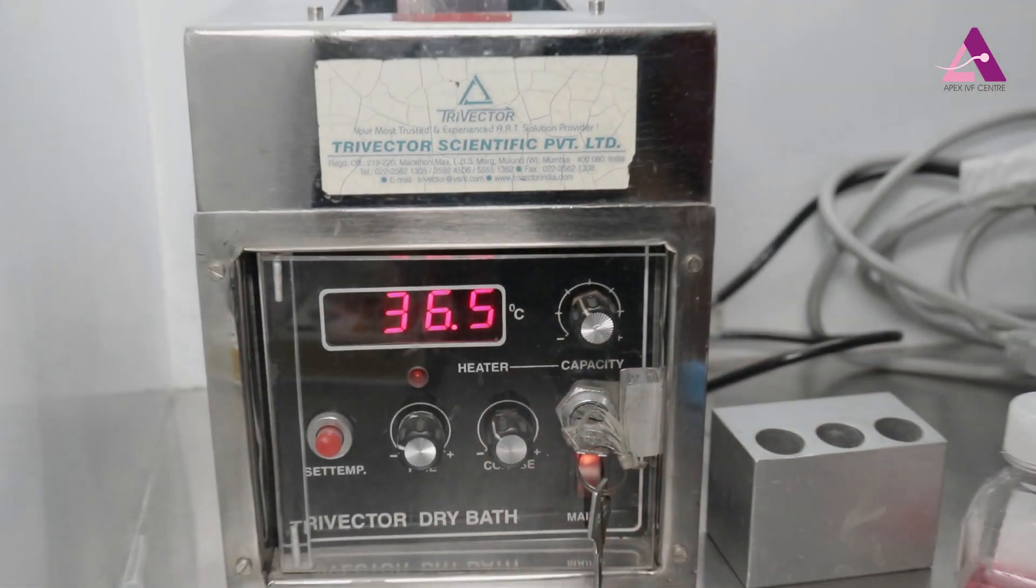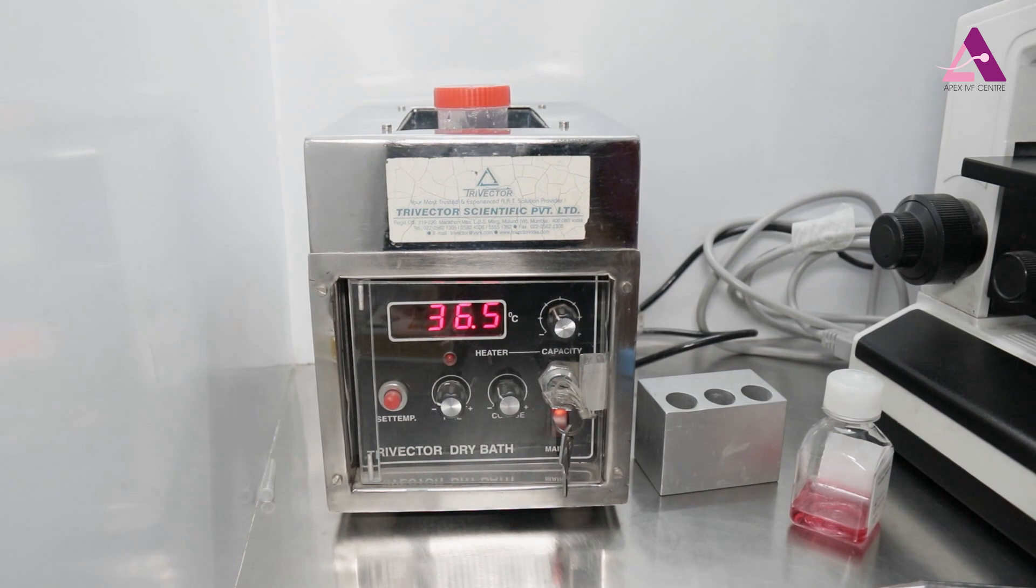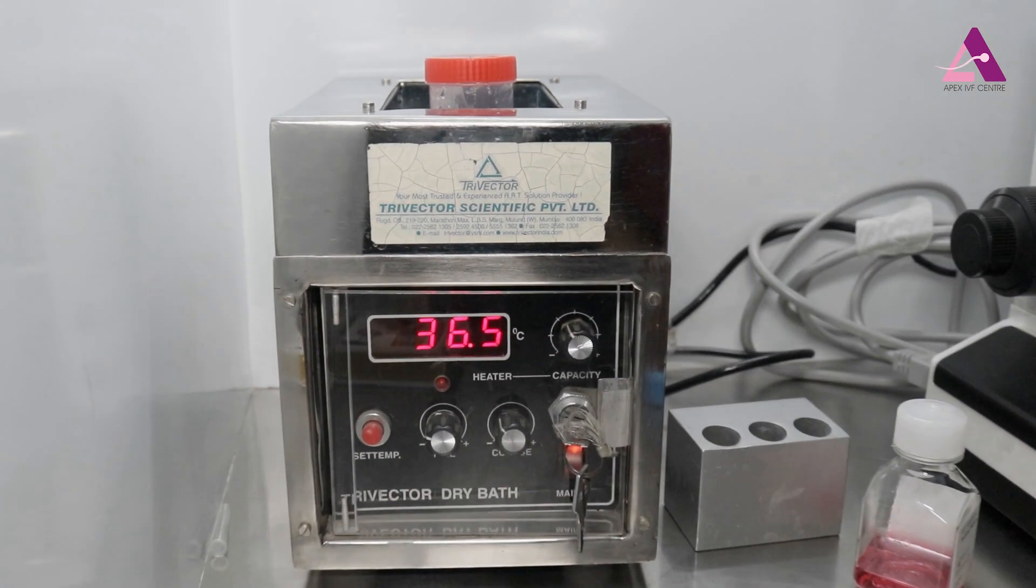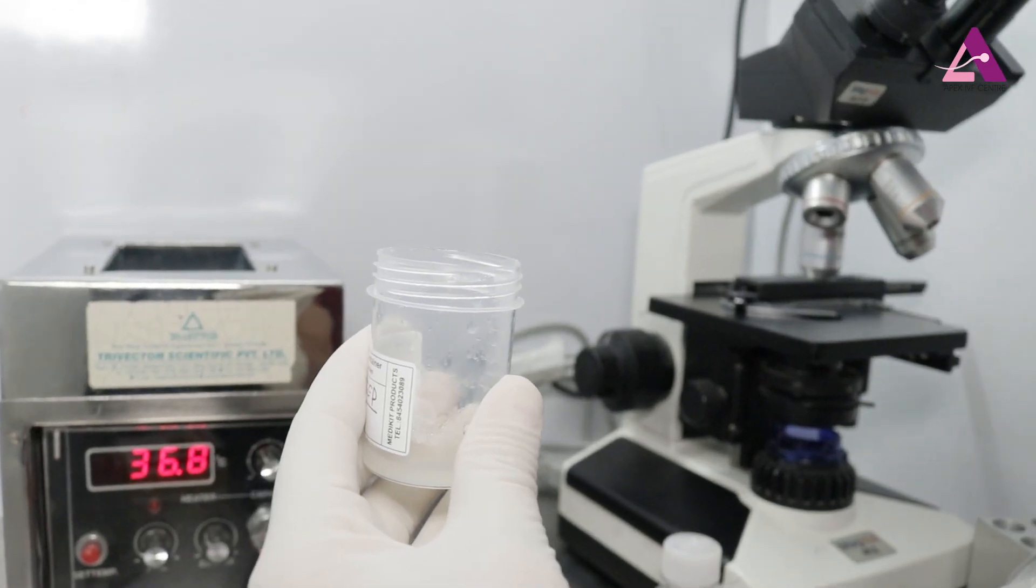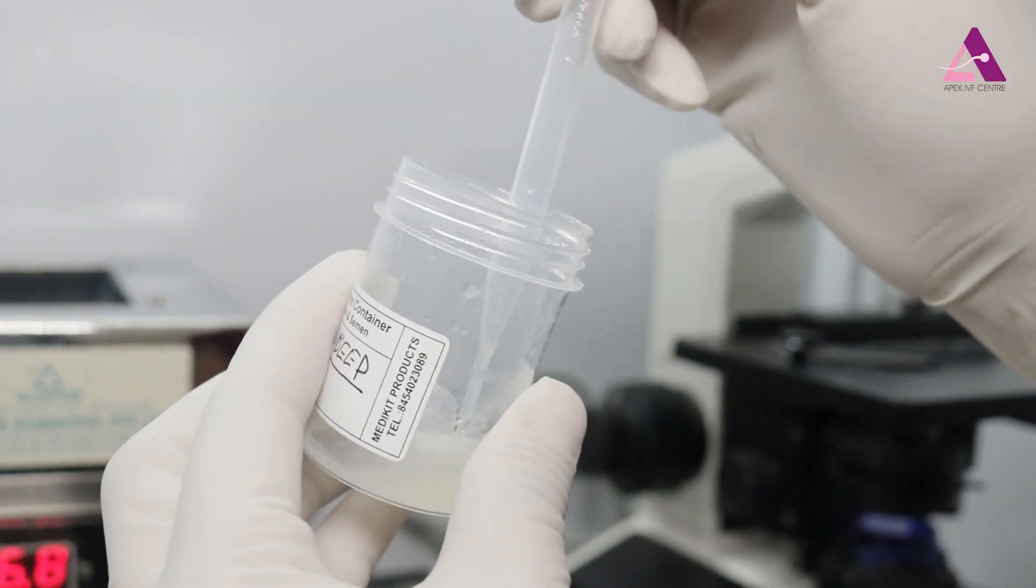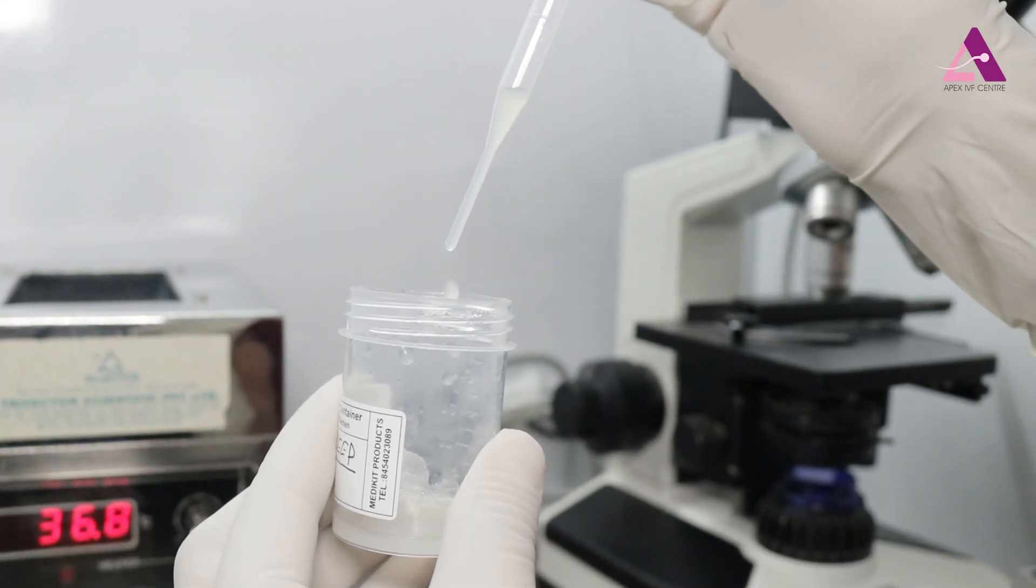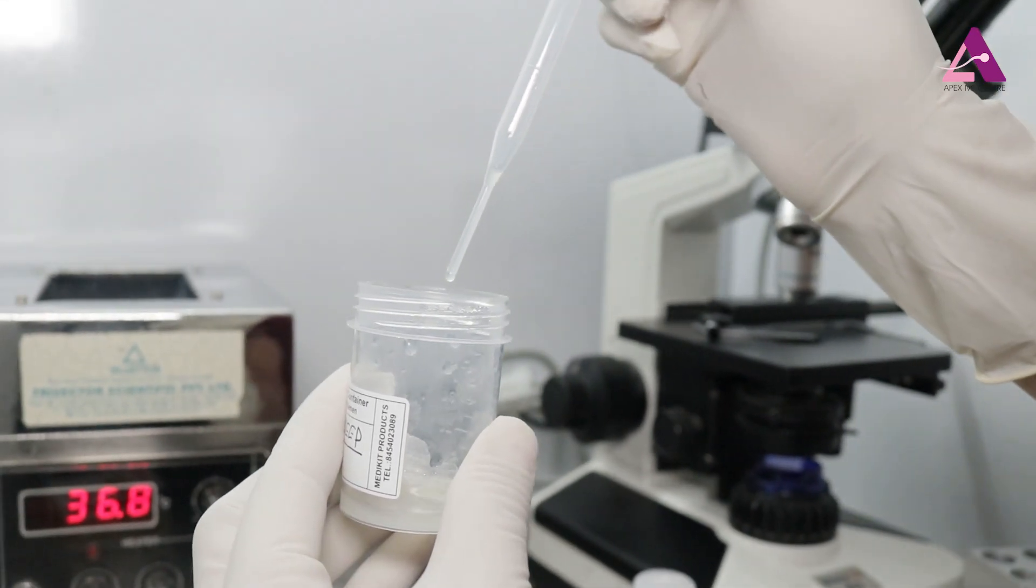keep it for a period of 25 to 30 minutes at a temperature of approximately 36 degrees and let it liquefy. After 30 minutes we can see how the semen sample becomes. Sometimes it takes a little more time for the sample to be liquefied.